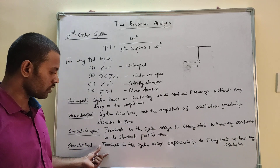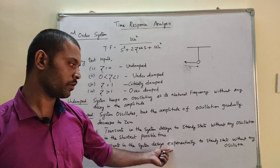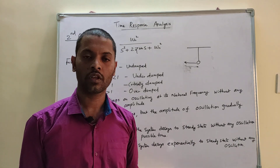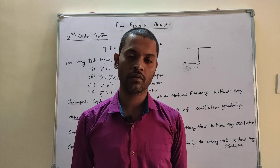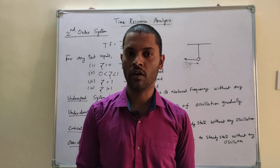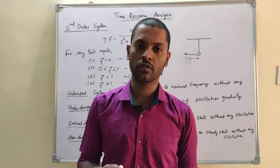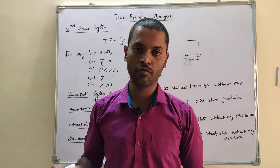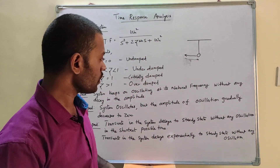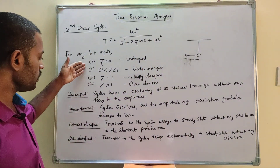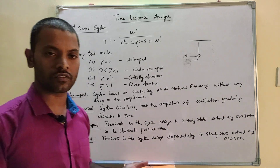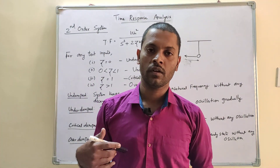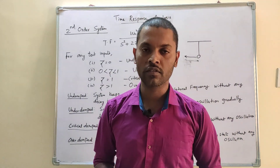Next is the over-damped system, where zeta is greater than 1. The transient in the system decays exponentially to steady state without any oscillation, but it takes a larger time compared to critical damping. The system is stable but reaches its steady state position more slowly. Depending on the damping ratio, we can analyze four types of systems.